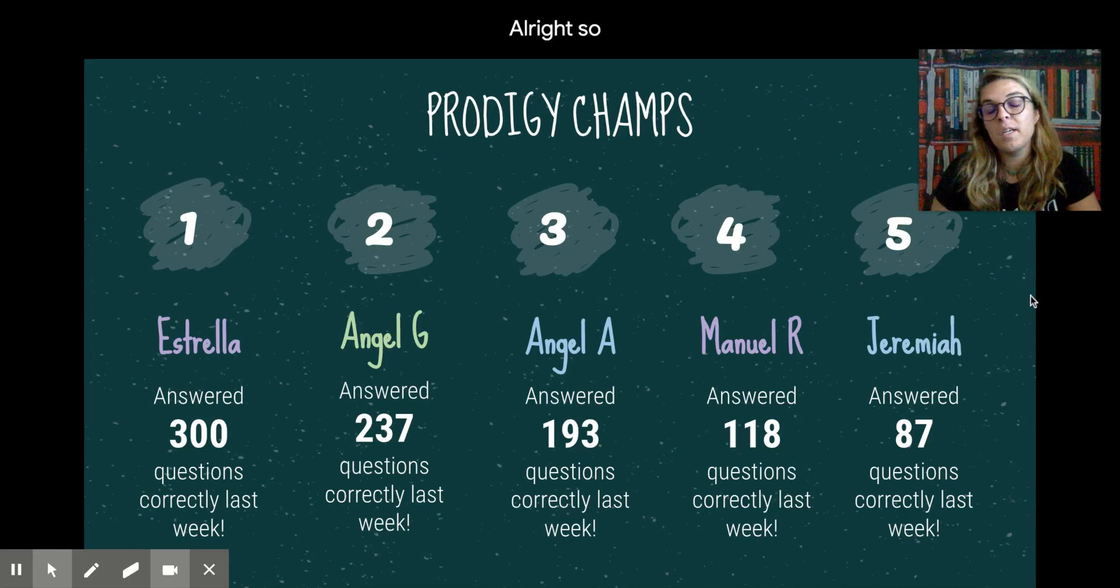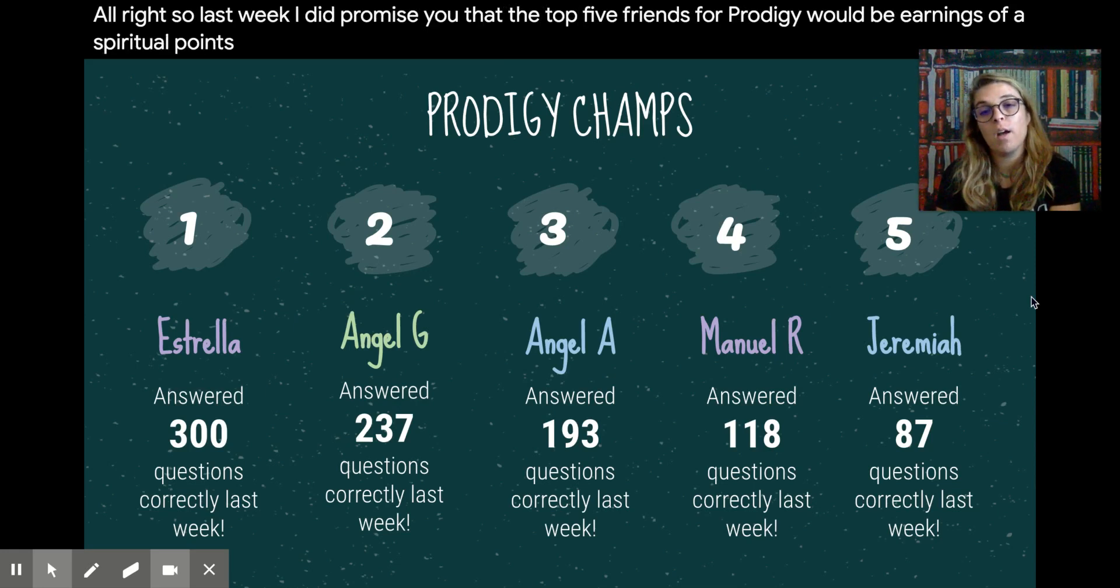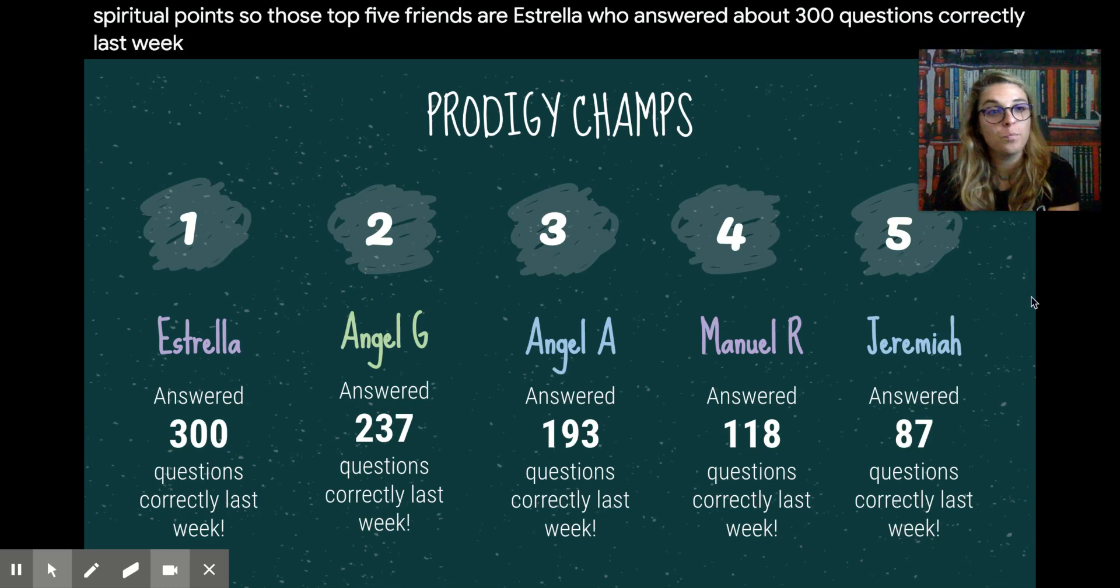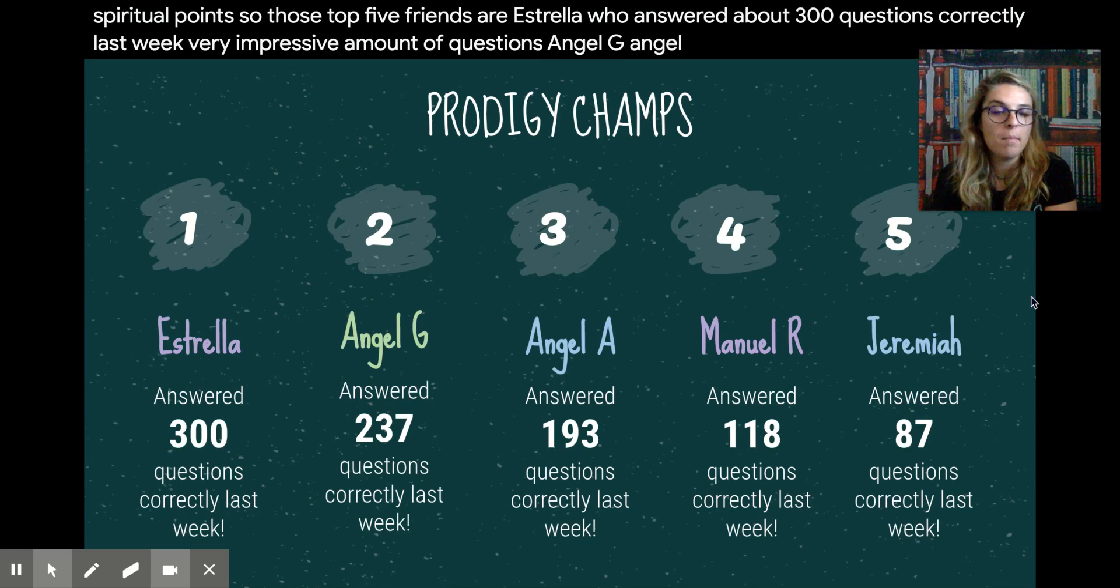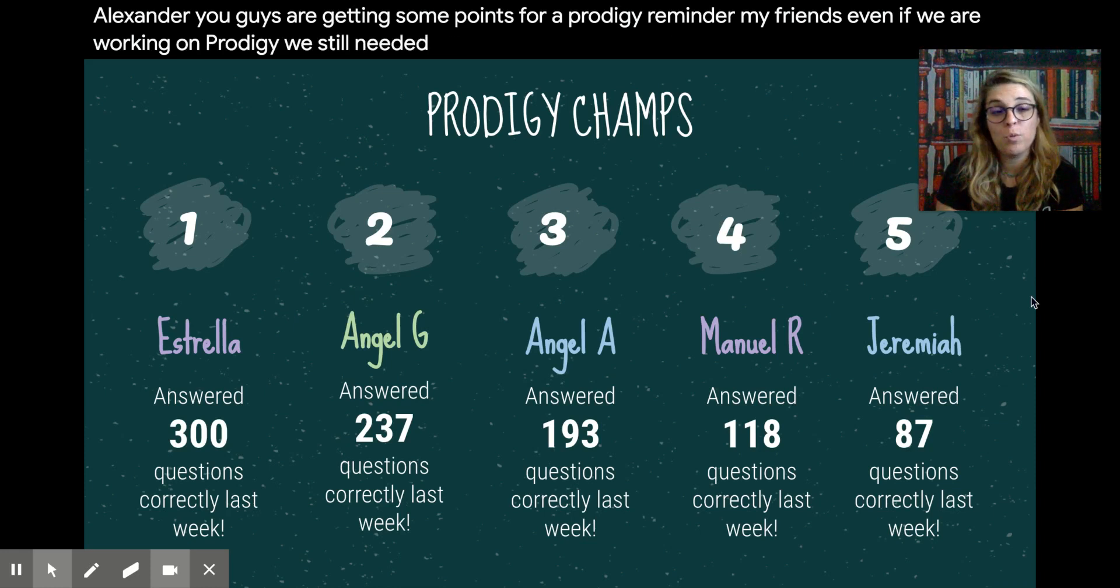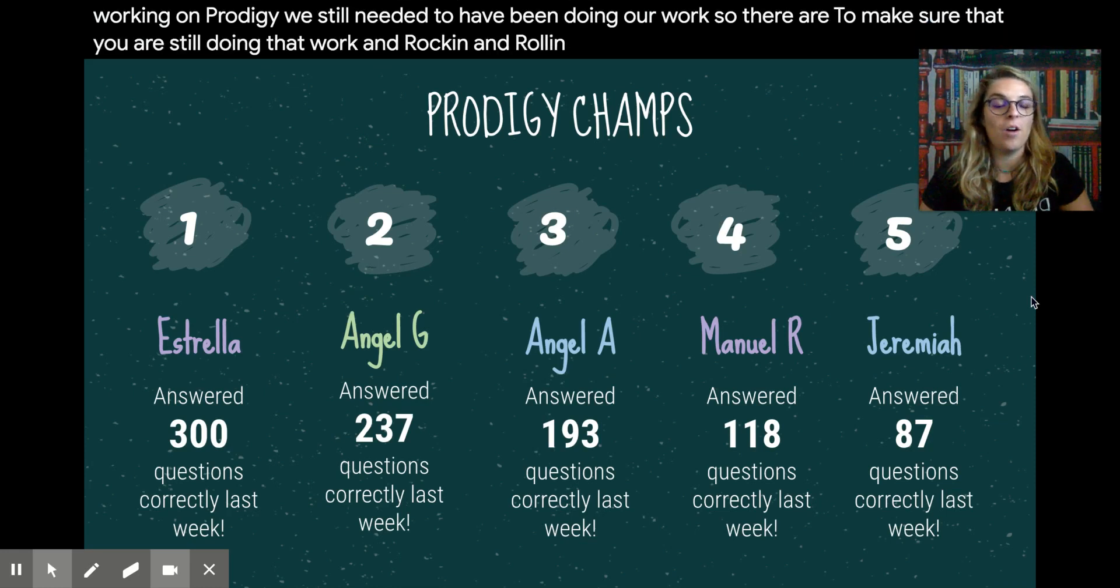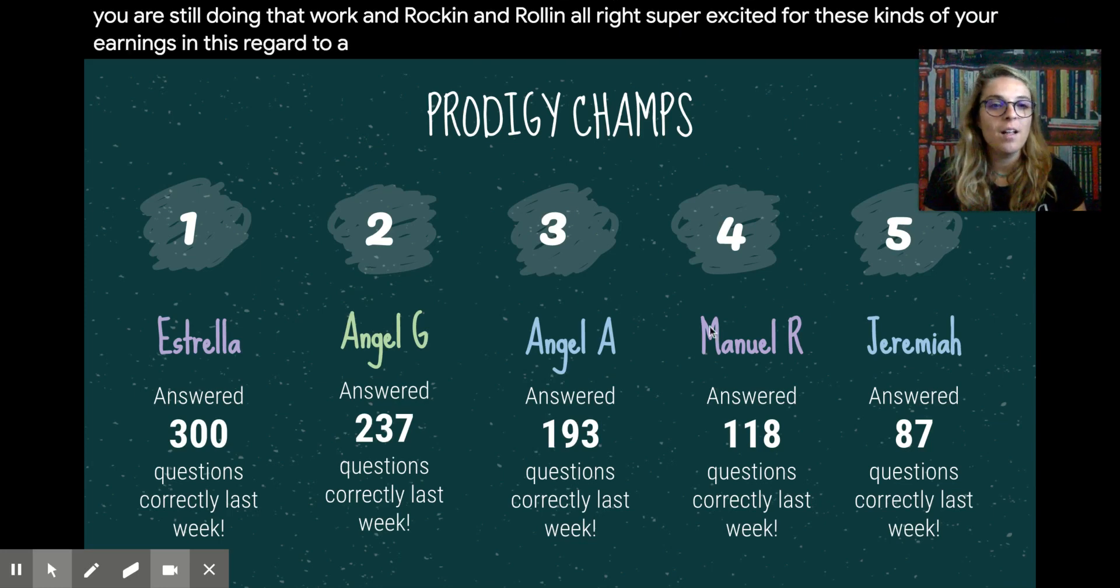All right. So last week I did promise you that the top five friends for Prodigy would be earning some virtual points. So those top five friends are Estrella, who answered about 300 questions correctly last week. Very impressive amount of questions. Angel G, Angel A, Manuel Rojas, and Jeremiah Alexander. You guys are getting some points for Prodigy. Reminder, my friends, even if we are working on Prodigy, we still need to have been doing our work. So there are even some friends up here who may not have even taken our quiz yet. So make sure that you are still doing that work and rocking and rolling. Super excited for these virtual points earnings. Let's rock and roll.